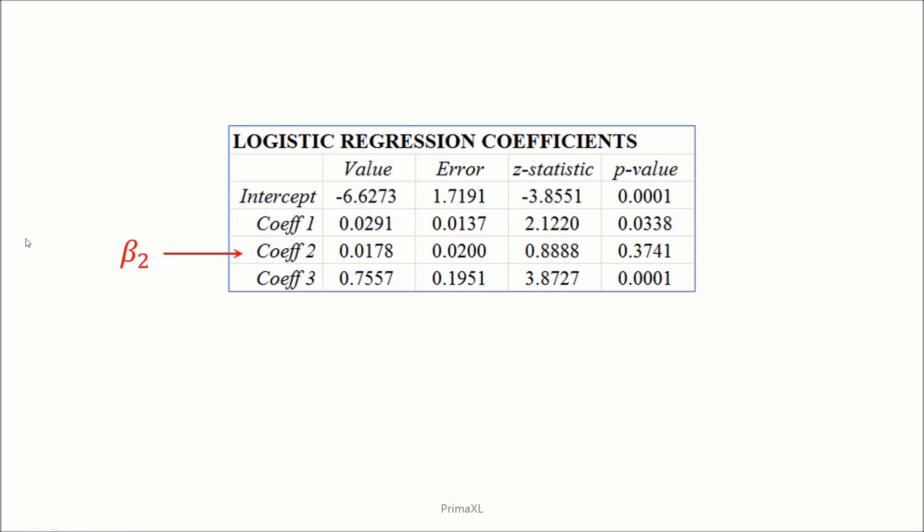In the second column, we have the coefficient values. Then, in the third column, we have the corresponding errors.